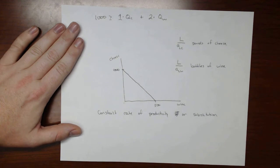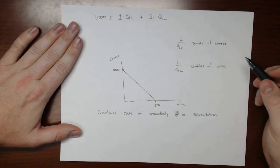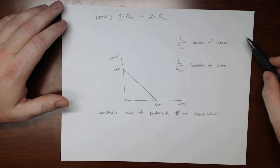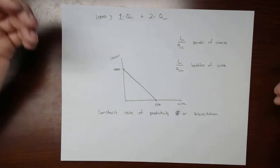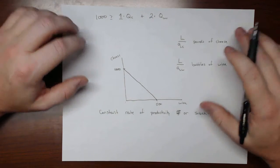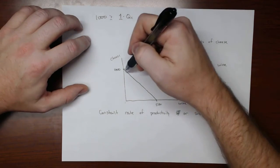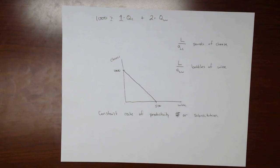We're assuming that the only thing that goes into production in this case is labor. You either allocate labor towards cheese or wine. All labor is equally productive. There's no differences between labor hours or anything like that, so we just get a nice straight line curve.